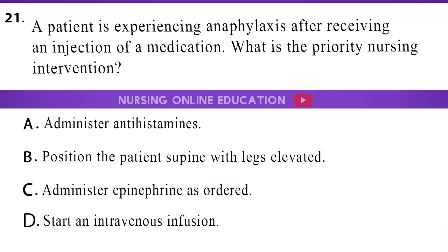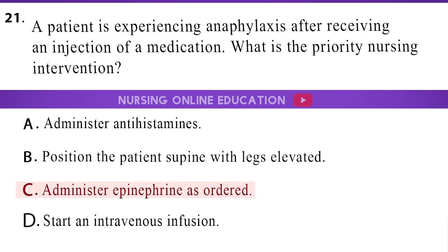A patient is experiencing anaphylaxis after receiving an injection of a medication. What is the priority nursing intervention? A. Administer antihistamines. B. Position the patient supine with legs elevated. C. Administer epinephrine as ordered. D. Start an intravenous infusion. The answer is option C: Administer epinephrine as ordered.